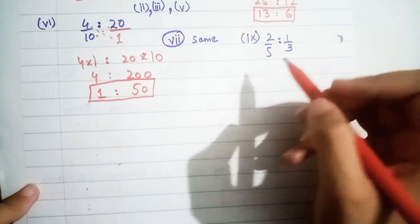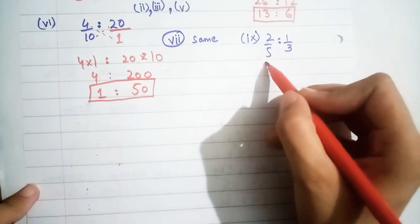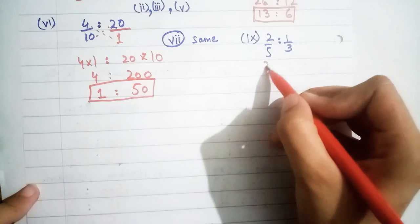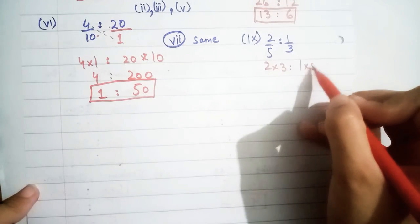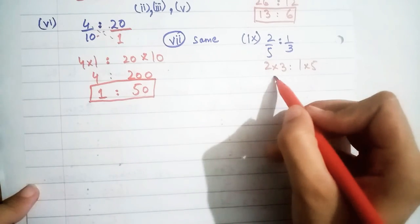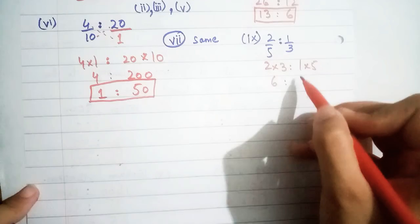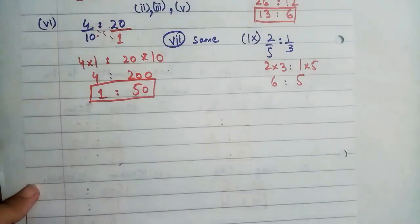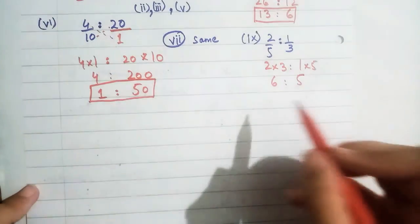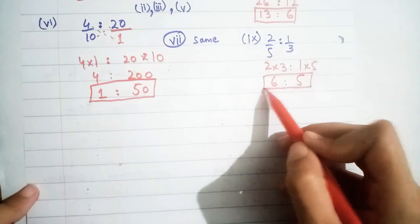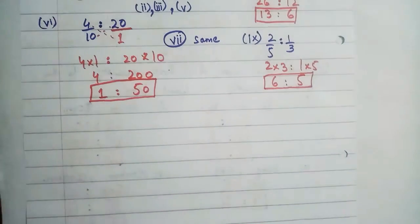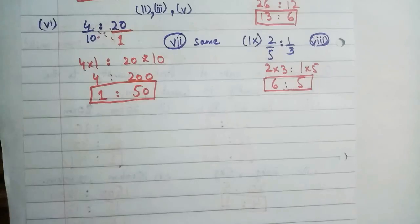For the remaining parts of Question 2, the method is the same: simply perform cross-multiplication. For example, 2 × 3 = 6 and 1 × 5 = 5, giving the ratio 6 : 5. The answer for each part follows the same cross-multiplication approach.